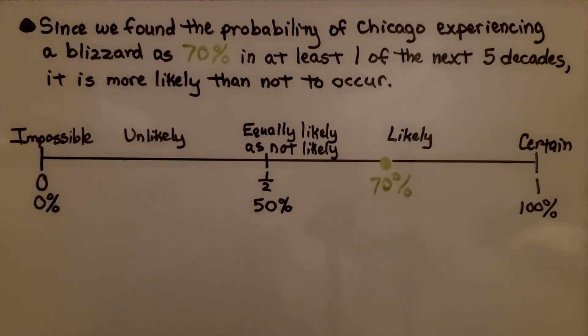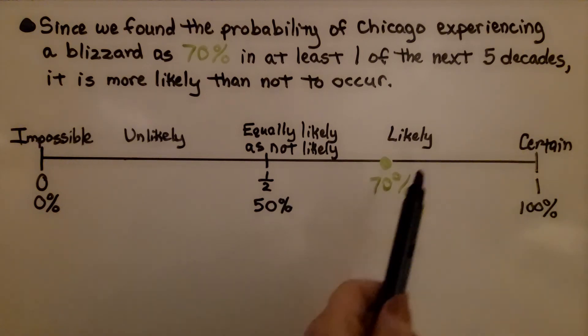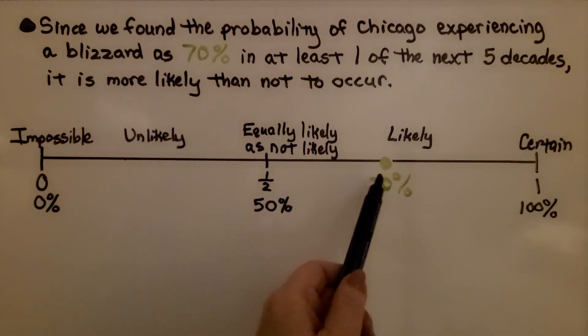Since we found the probability of Chicago experiencing a blizzard as 70% in at least one of the next five decades, it's more likely than not to occur. On our number line, zero is impossible, there's no way it's going to happen, and certain is 100%, it's definitely going to happen. The 70% lands about right here, so it's likely, it's more likely than not to occur.